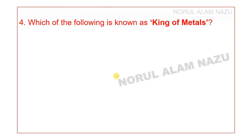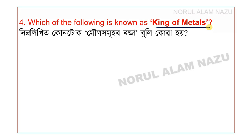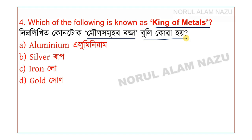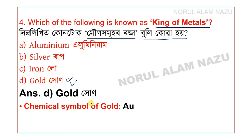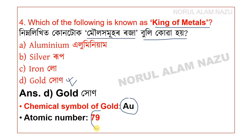Question 4: Which of the following is known as the king of metals? The options include aluminium, silver, iron, and gold. Gold is known as the king of metals. Its symbol is AU and its atomic number is 79.